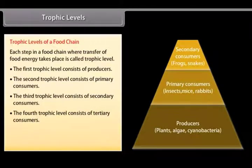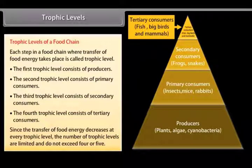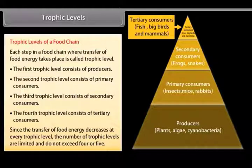The fourth trophic level consists of tertiary consumers. Since the transfer of food energy decreases at every trophic level, the number of trophic levels are limited and do not exceed 4 or 5.